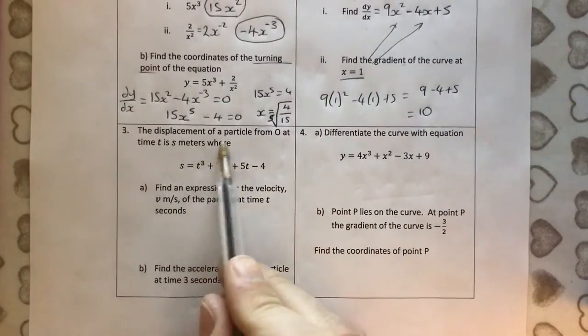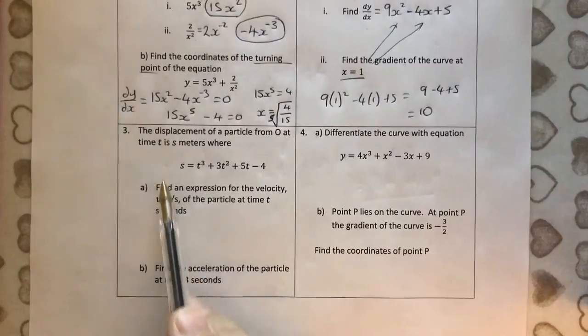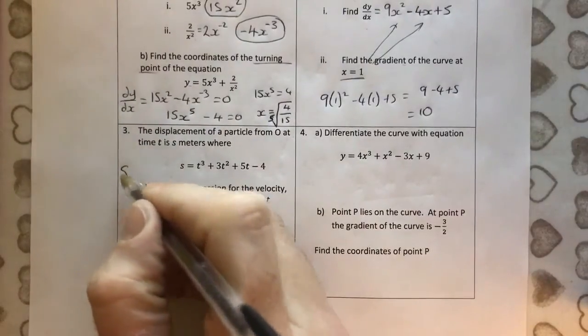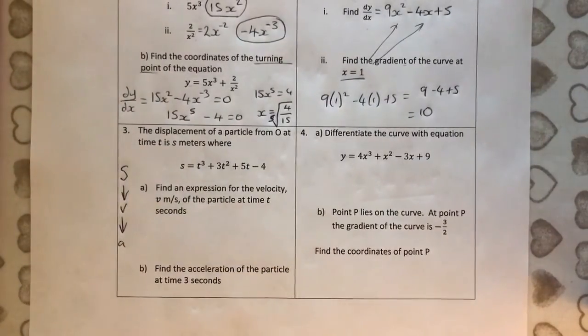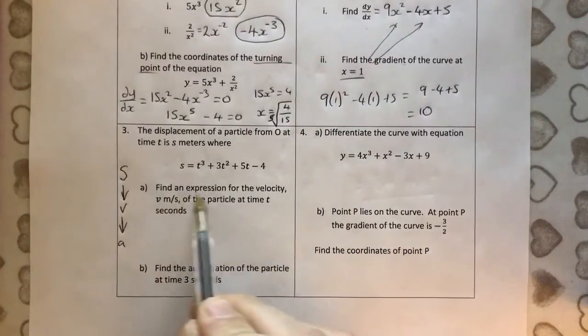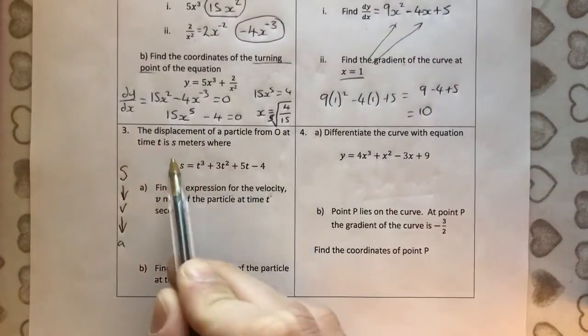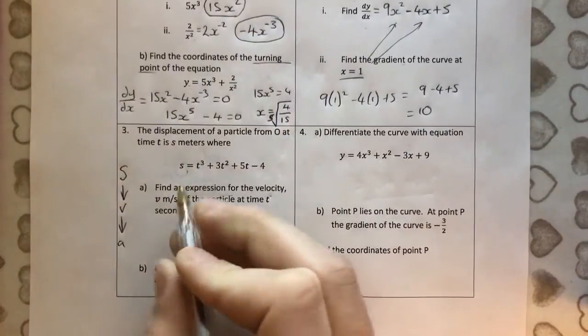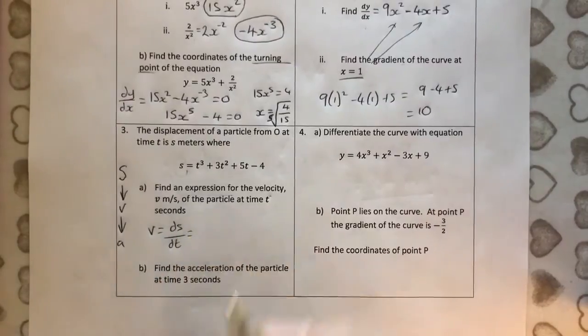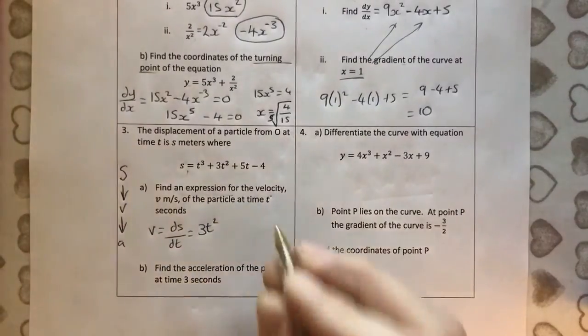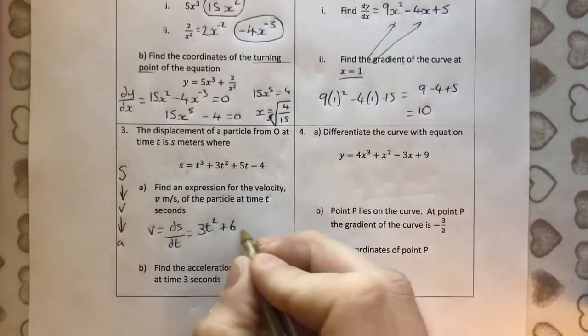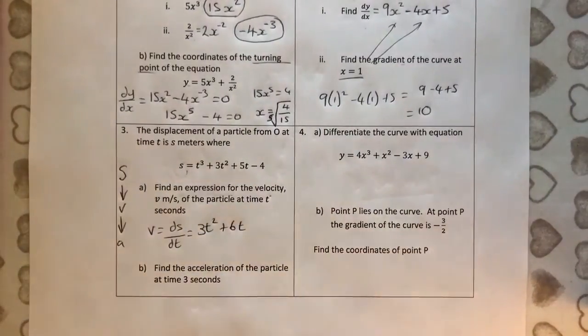Simple. ds by dt. You don't really need to write the ds by dt. You just write v equals and times the front by the power. Reduce the power by 1. Times the front by the power. So, we get 6. Reduce the power by 1. We don't need to put t to the power of 1. And we get plus 5. And the minus 4 is going to disappear. So, that was easy.